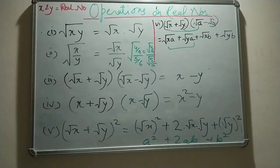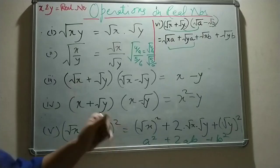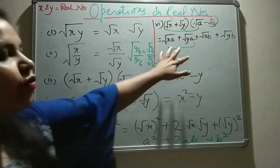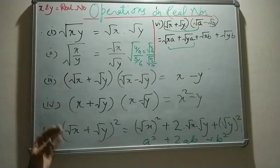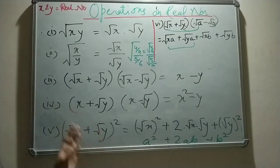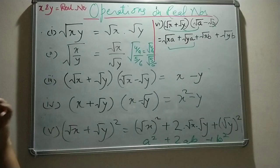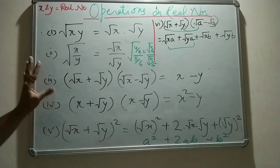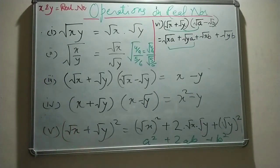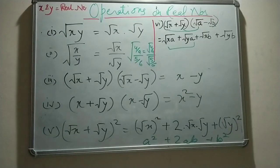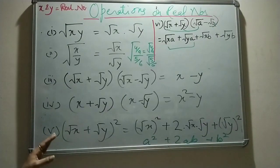This is the distributive property which we apply here. That's why I made you recall all your previous formulas, so that you can easily go through the operations as well as the properties of irrational numbers. By using all these formulas and properties we are going to solve the rest of the exercise. I hope you all have understood it very well. Let's meet in the next class. Till then, stay at home, stay safe.